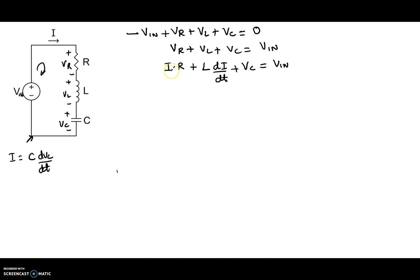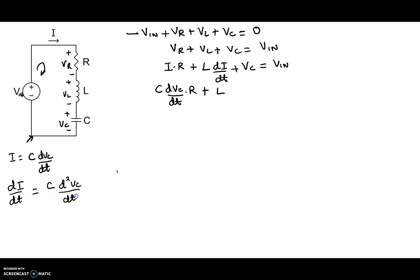This I right here gets replaced with C·dVc/dt times R, plus L times di/dt. Since I = C·dVc/dt, di/dt becomes C·d²Vc/dt². So di/dt gets replaced by C·d²Vc/dt², giving us: RC·dVc/dt + LC·d²Vc/dt² + Vc = Vin. Now we have a second-order differential equation.